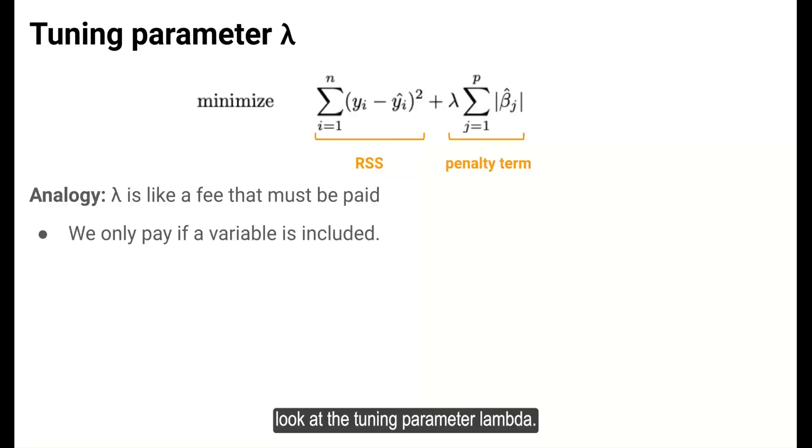Let's take a closer look at the tuning parameter lambda. We've said that the severity of the penalty is determined by lambda. So we can think of lambda as a fee to be paid for including a variable in the model. We only pay if a variable is included because lambda is multiplied by the estimated coefficient.